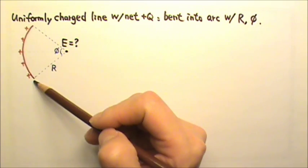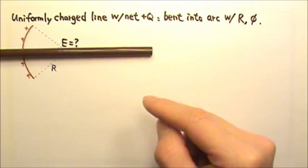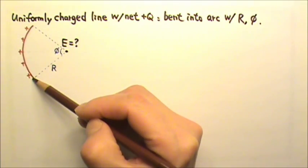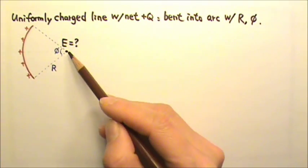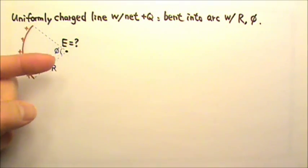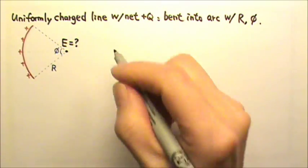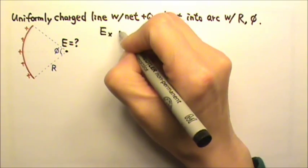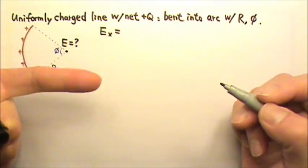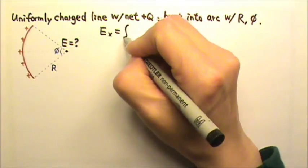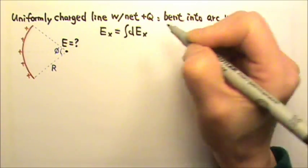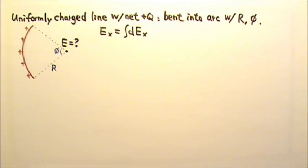This charge distribution is symmetric about the center line. Since this is positive charge, by symmetry the electric field must point to the right. So when we look for the electric field, we only have to integrate its x-component — we know the y-component is just going to be zero.